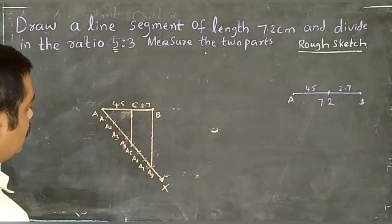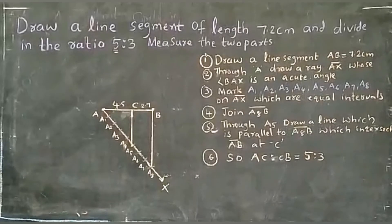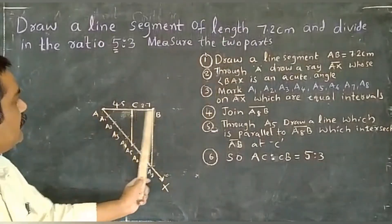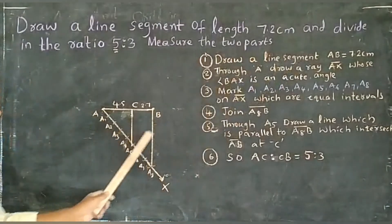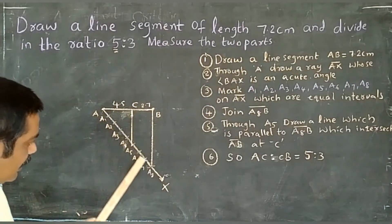This is the method to construct and divide a line segment in a ratio of 5 to 3. Now let's go through the construction steps. First, draw a line segment AB equal to 7.2 cm. Through A, draw a ray AX